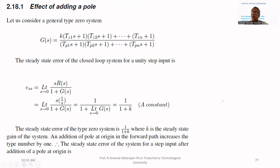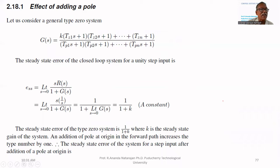Effect of adding a pole. We have seen the effect of adding a zero. Now, if you add a pole, what will happen? What will happen to the order of the system? The order will increase.